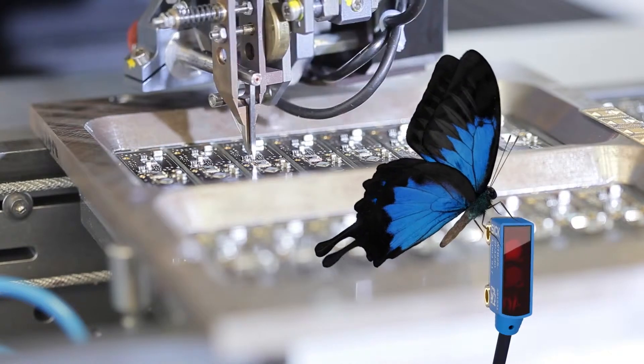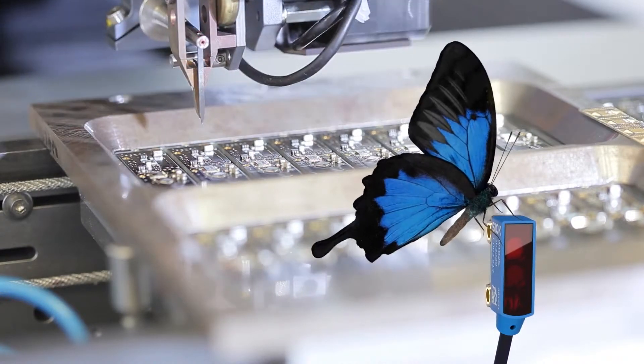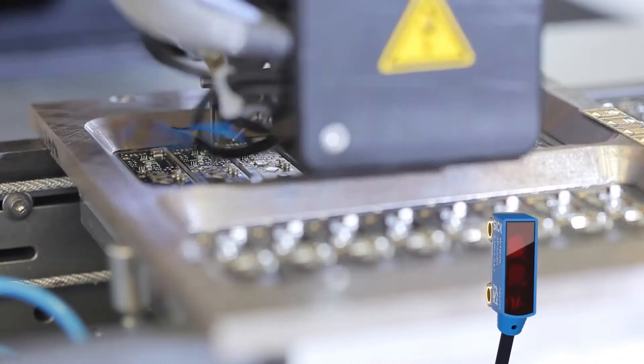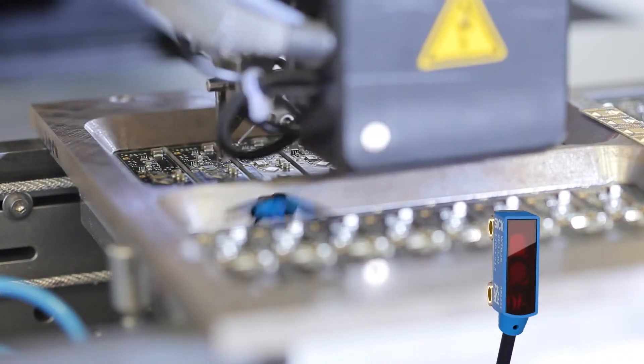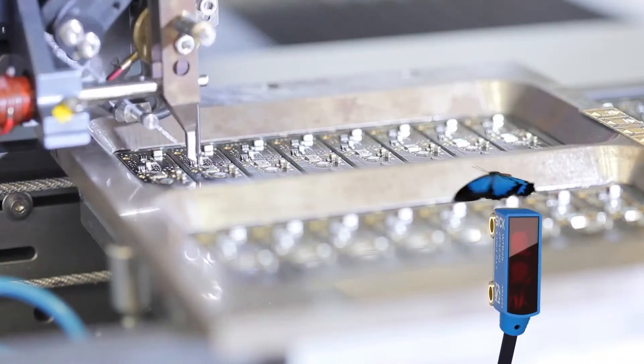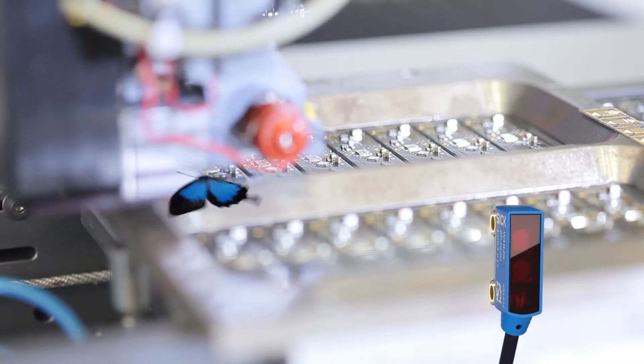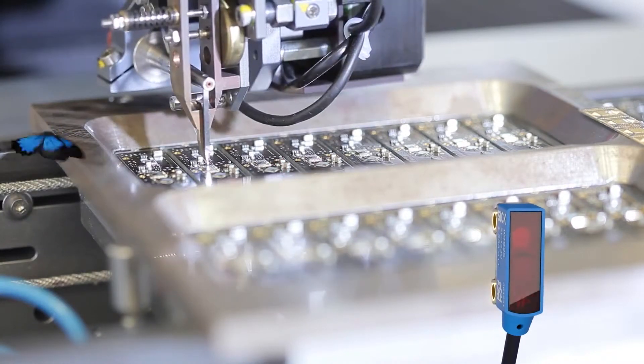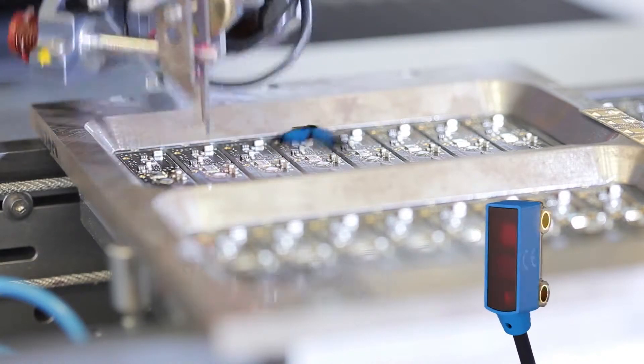This butterfly is called the Ulysses butterfly. What's special about it is that its wings contain the very blackest black that scientists have ever discovered in nature. These wings absorb black almost completely, reflecting less than 1% of the light.